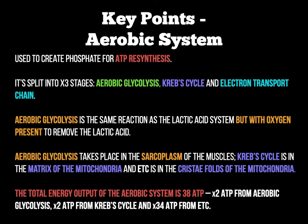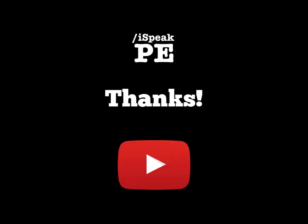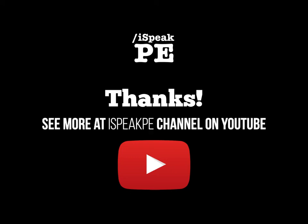The total energy output for this system is 38 ATP compounds: two phosphates for ATP from aerobic glycolysis in stage 1, two phosphates from the Krebs cycle in stage 2, and 34 phosphates from the electron transport chain in stage 3. The two byproducts for this energy system are carbon dioxide and H₂O (water). Please go over this screencast a few times and make good notes. If you need any more support with A-level PE, head to the iSpeak PE channel on YouTube.